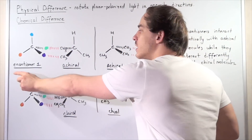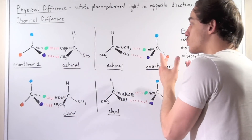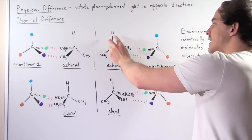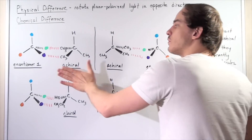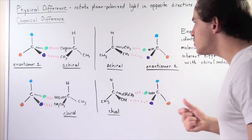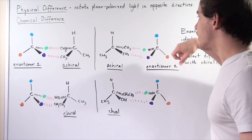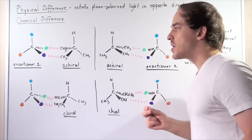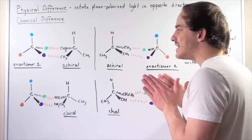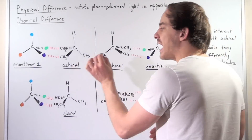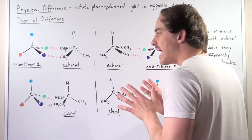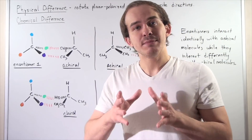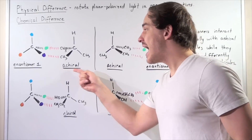Now let's examine how the S enantiomer — enantiomer number 2 — interacts with the same exact achiral molecule. We take this, flip it, and examine what the interaction is. In this interaction, we also have the green group of our enantiomer interacting with the methyl, and the purple group of our enantiomer interacting with the methyl. In other words, there is absolutely no difference between the interaction of enantiomer 1 and enantiomer 2 with an achiral molecule. And in fact, that's always true — our pair of enantiomers will always interact in the same exact identical way with achiral molecules.